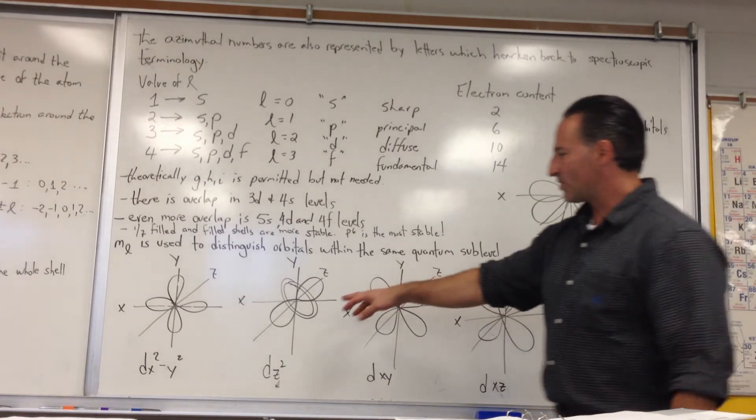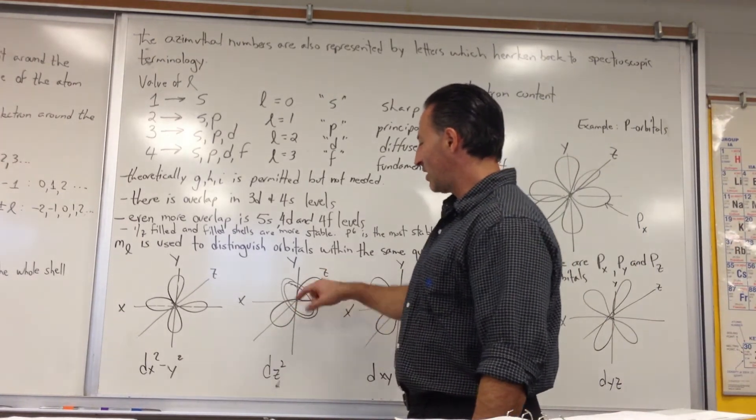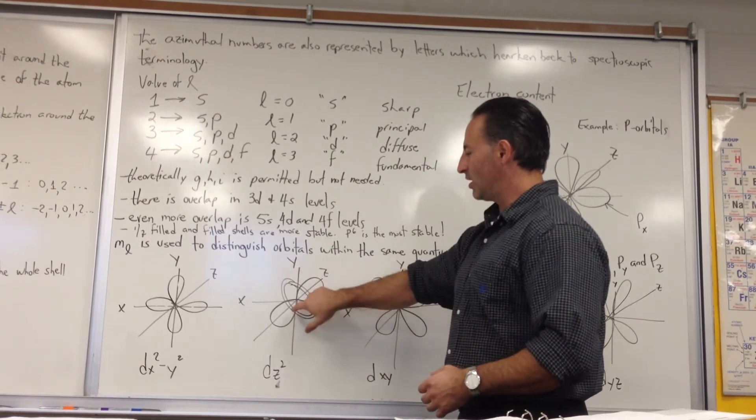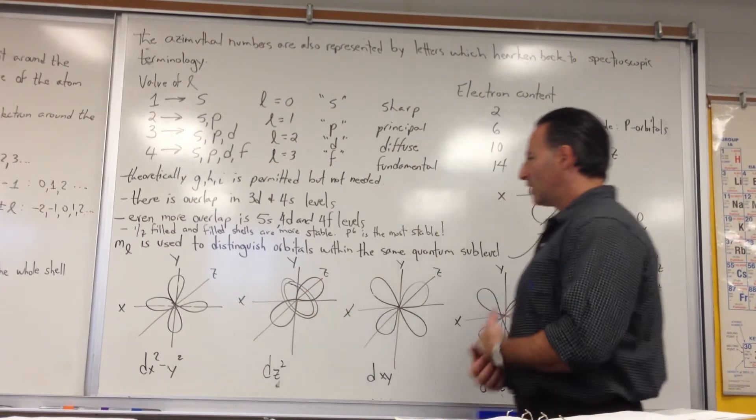They all look like lemniscates, except for the DZ squared, which is a combination of a lemniscate with a toroid. Looks like a donut near a lemniscate.